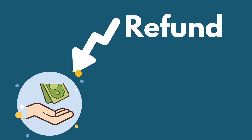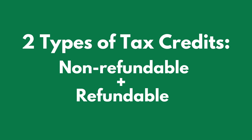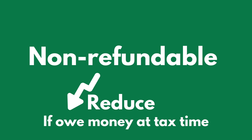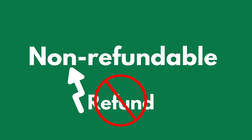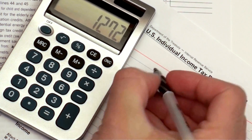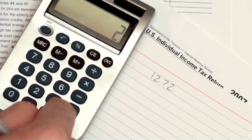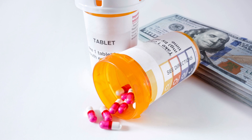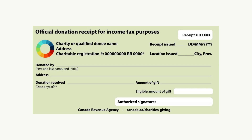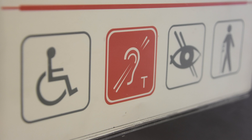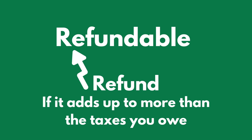Tax credits reduce your taxes payable — they are taken away from the taxes you owe and can even result in a refund. There are two types: non-refundable and refundable tax credits. Non-refundable tax credits reduce the amount of taxes you owe but do not result in a refund if your credits exceed your tax amount. Common types of non-refundable credits include the medical expenses tax credit, charity donations tax credit, disability tax credit, and Canada caregiver credit.